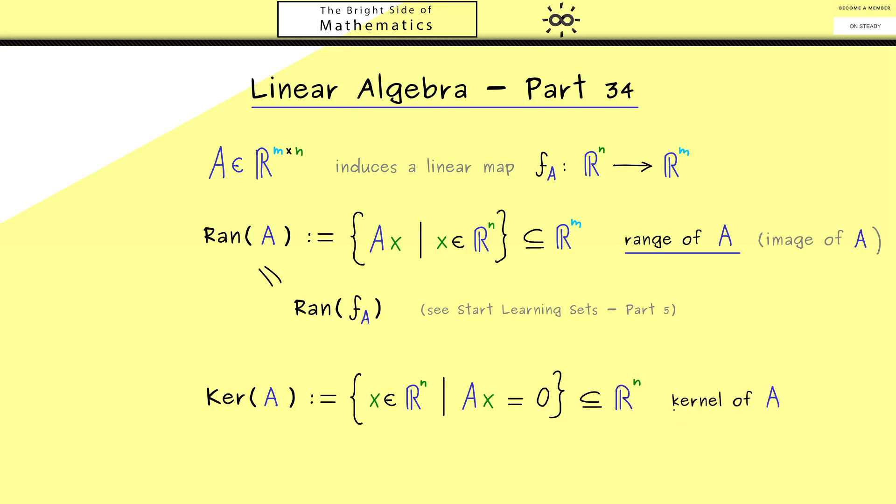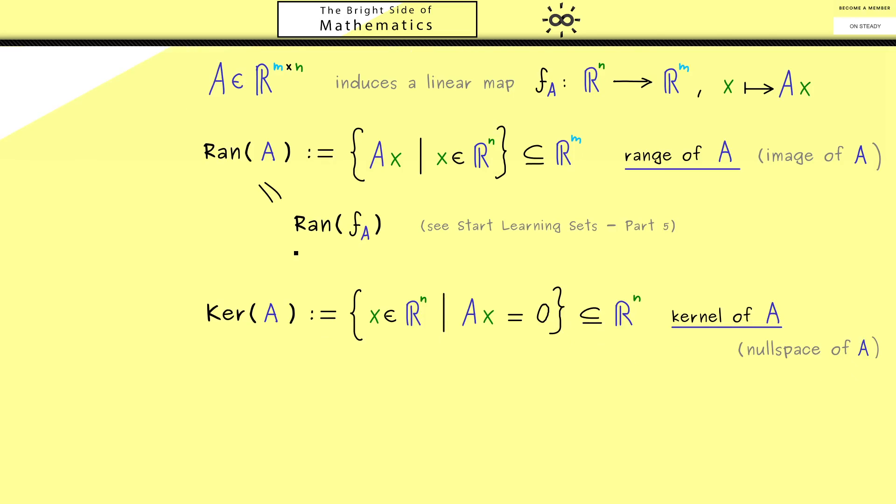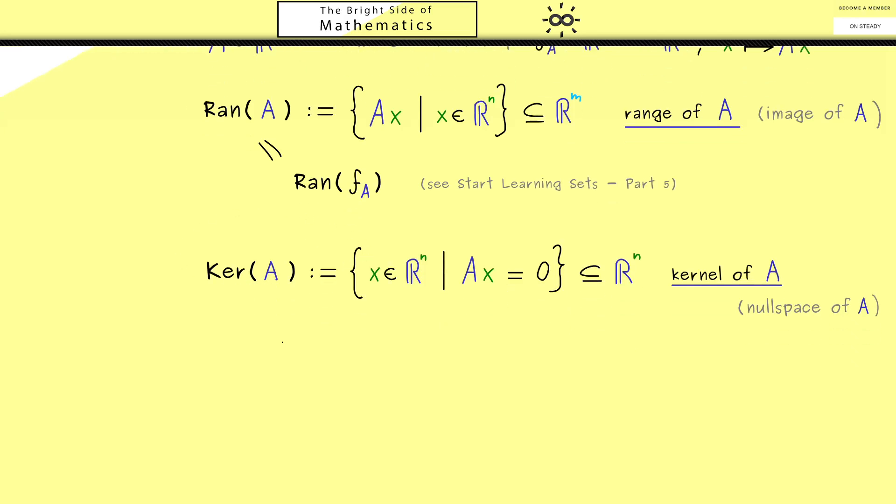This subset of R^n is called the kernel of A. It's a very important notion in linear algebra and you should definitely remember it. Moreover, you should know some people call the kernel just null space of the matrix. On the other hand, for each linear map we can define the kernel of the linear map by saying these are the elements that are sent to the zero vector. However, most of the time we will have a matrix when we talk about the kernel.